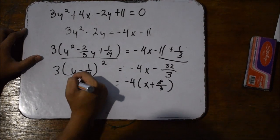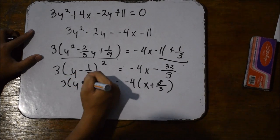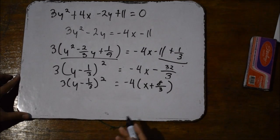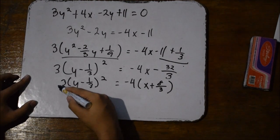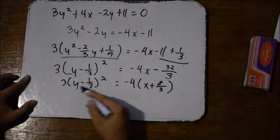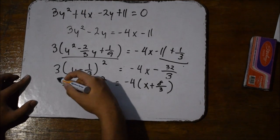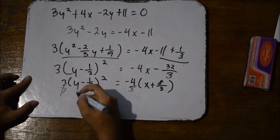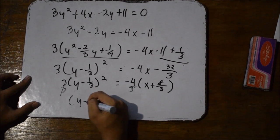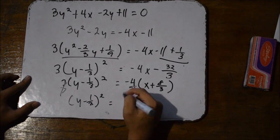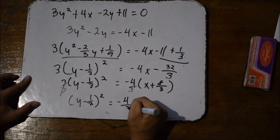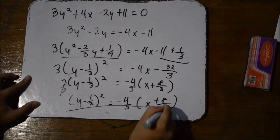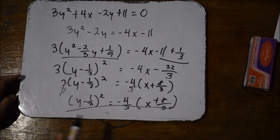Then we copy the left side. We know that this is still not in the standard form because there is a coefficient outside the binomial. So we're going to divide both sides by 3, canceling it out. The result is y minus 1 third squared is equal to negative 4 thirds x plus 8 thirds. So there we have it — the standard equation of the parabola.